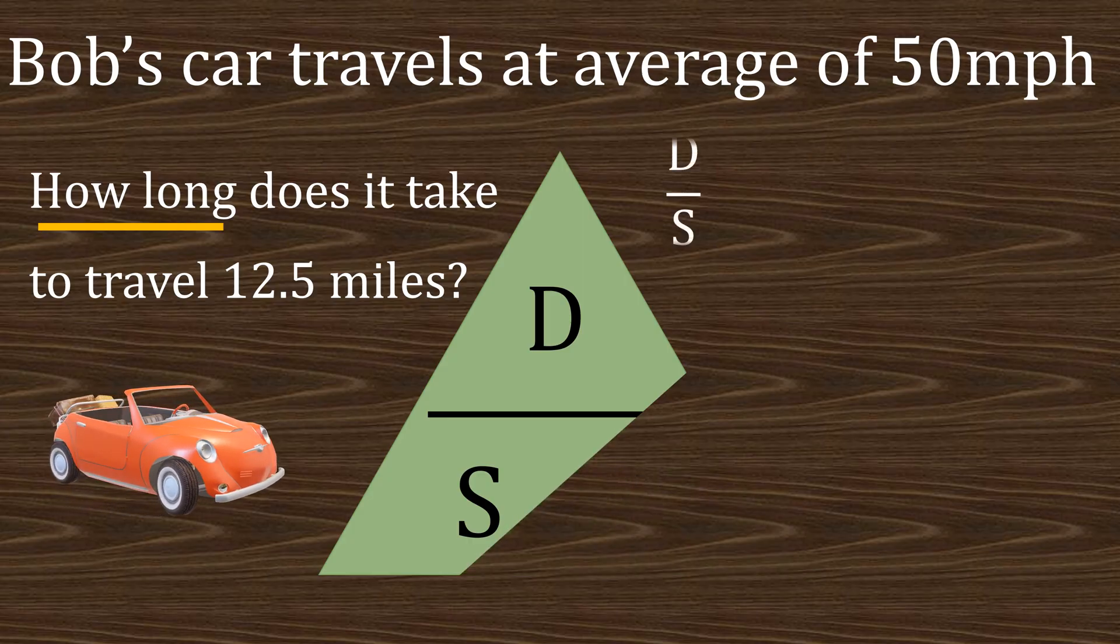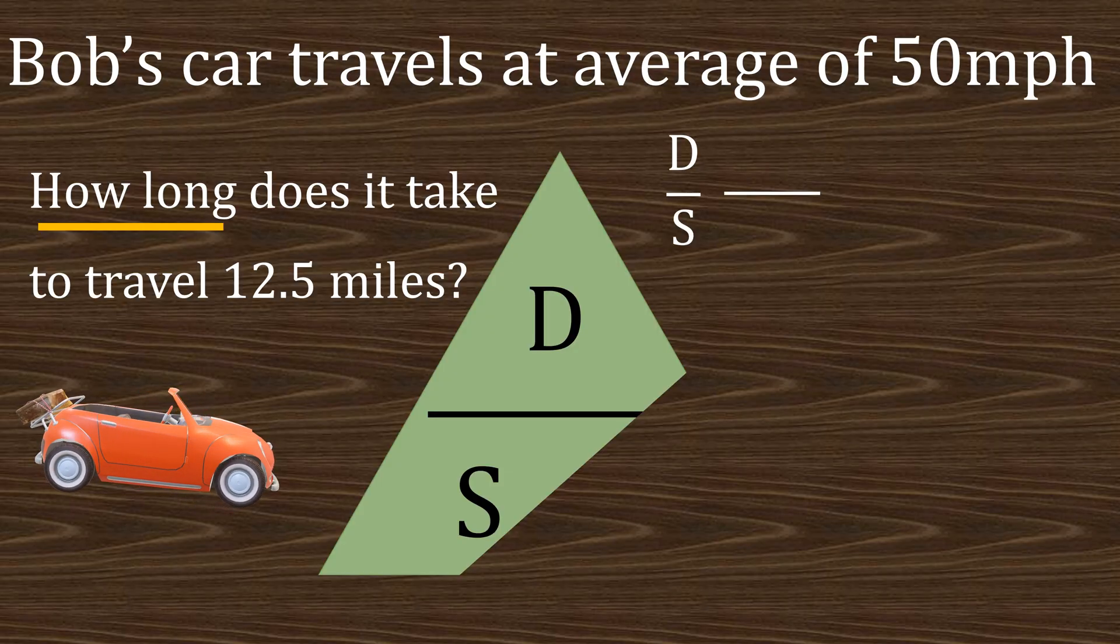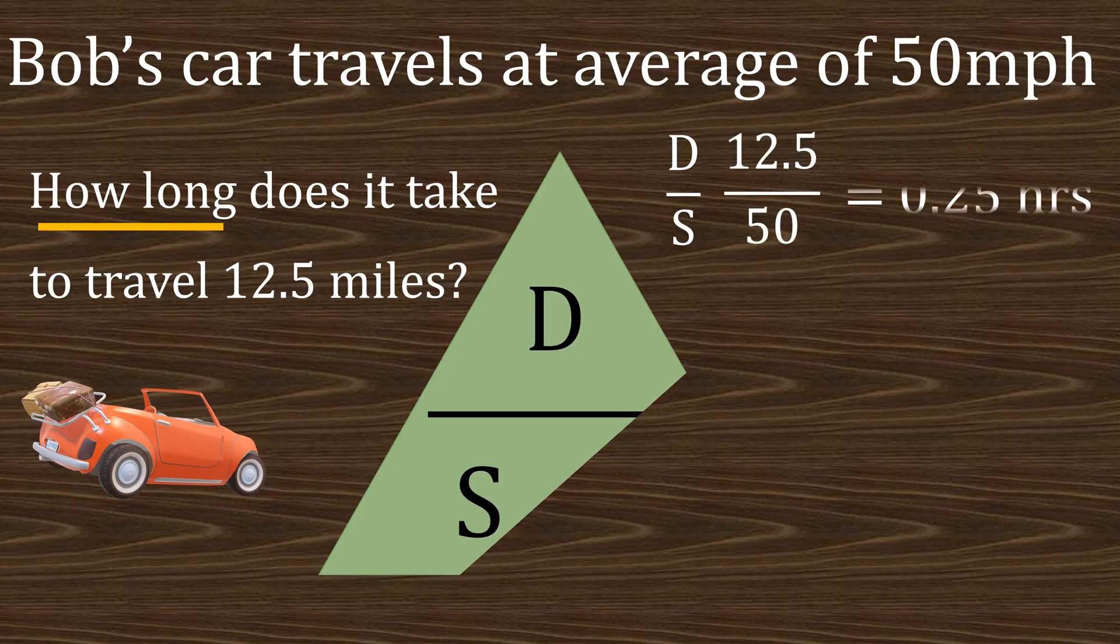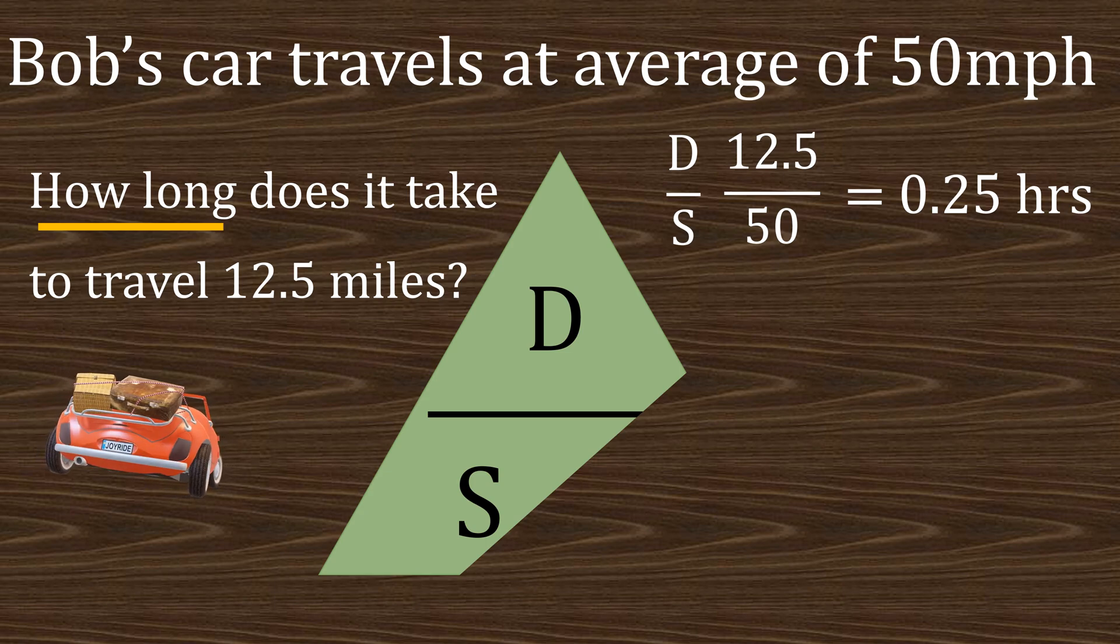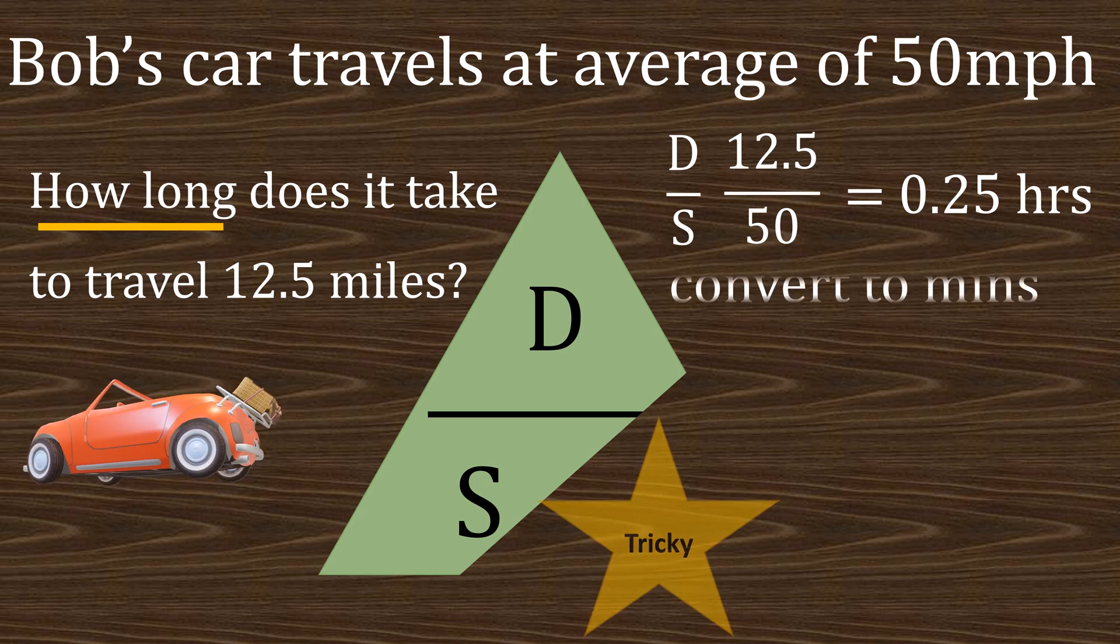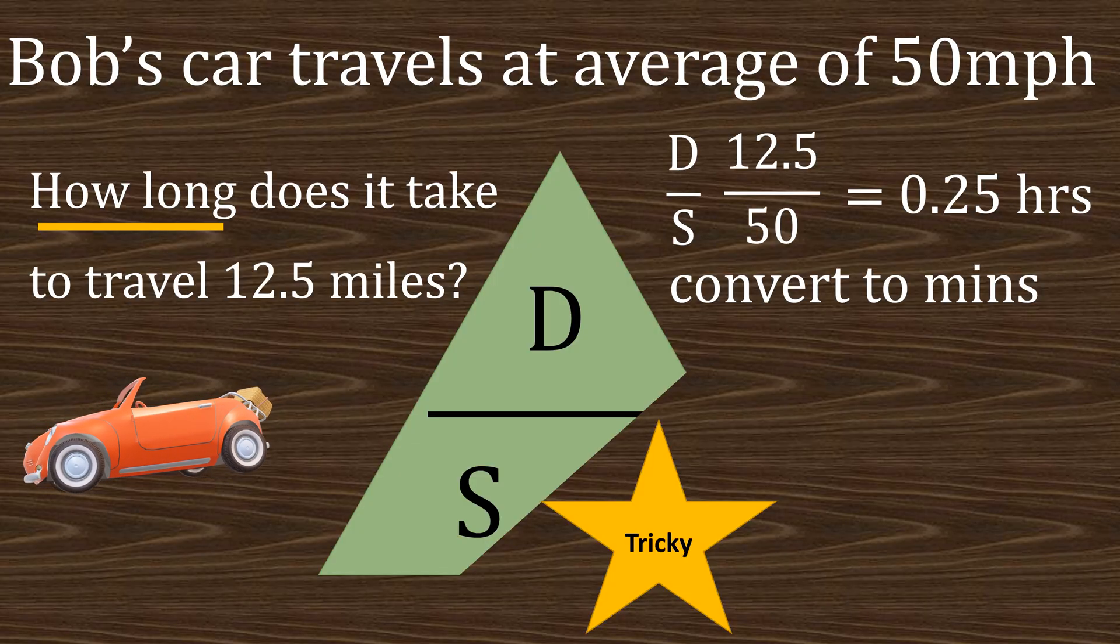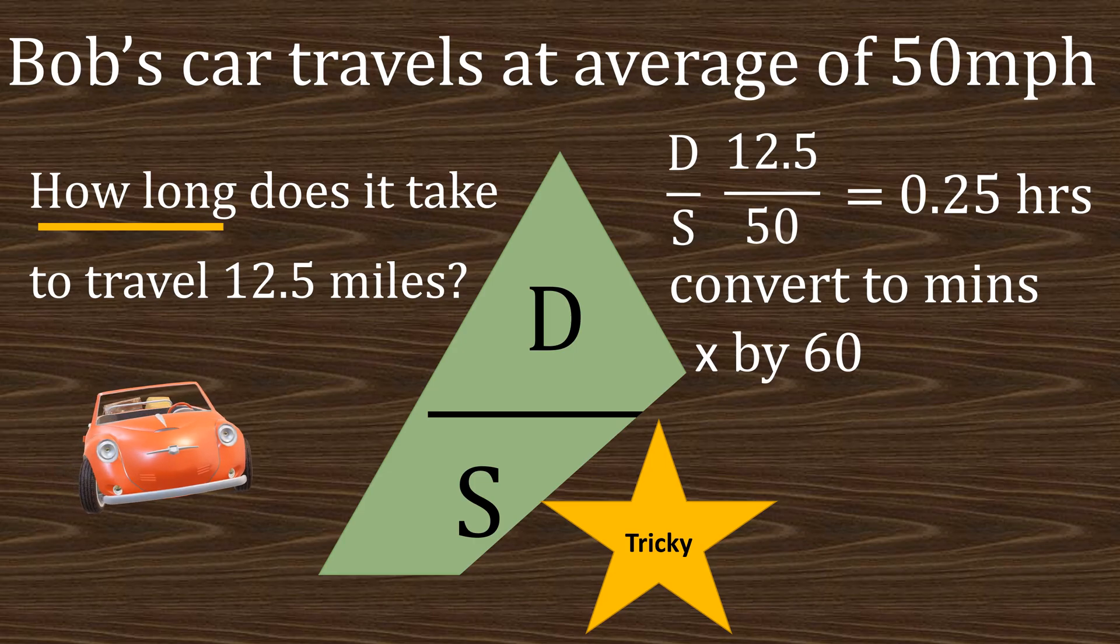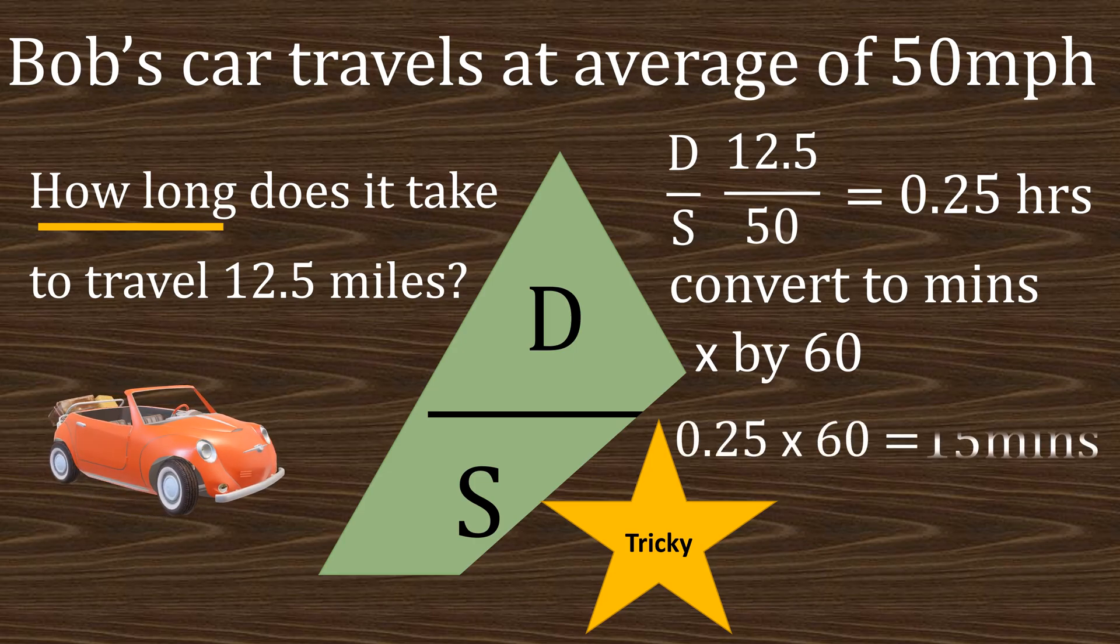us with distance divided by speed. So the distance 12.5 divided by 50 gives us 0.25. Now the tricky part here is we need to put this back into minutes, so we times this 0.25 by 60, giving us the answer: 15 minutes.